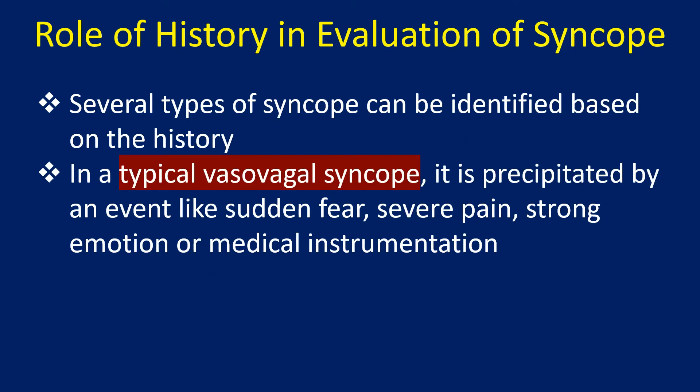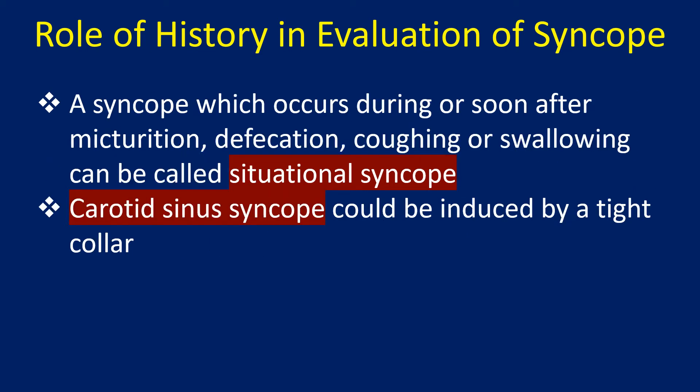Several types of syncope can be identified based on the history. In a typical vasovagal syncope, it is precipitated by an event like sudden fear, severe pain, strong emotion, or medical instrumentation. A syncope which occurs during or soon after micturition, defecation, coughing, or swallowing can be called situational syncope.